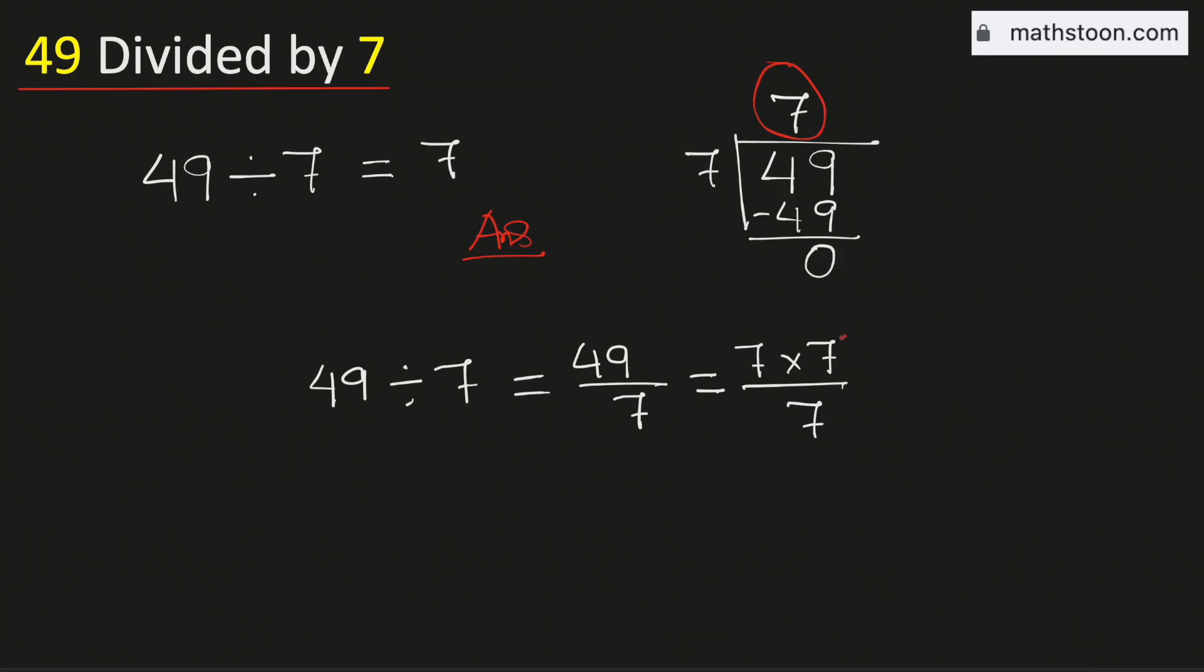Now cancel the common 7. So we are just left with 7. Therefore, 49 divided by 7 is 7.